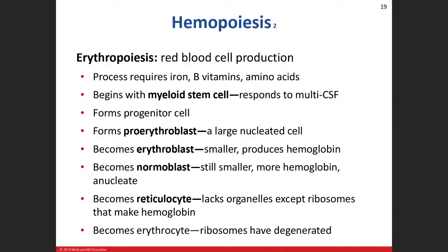We lose the nucleus at the normoblast stage, and we still have organelles. When we get to the reticulocyte, think of it as a baby red blood cell. If you're looking at a CBC with diff — your blood panel with differential — and they look at a microscopic slide of your blood, the report might show an increased reticulocyte count. There could be a reason: they're not maturing, or you could have low blood oxygen so your body's trying to make more red blood cells.